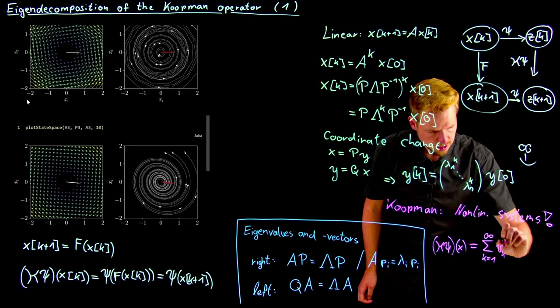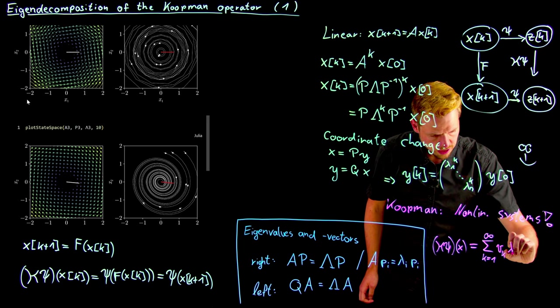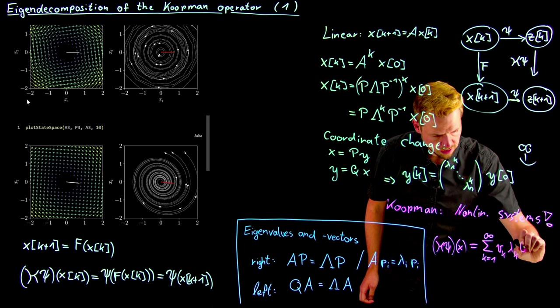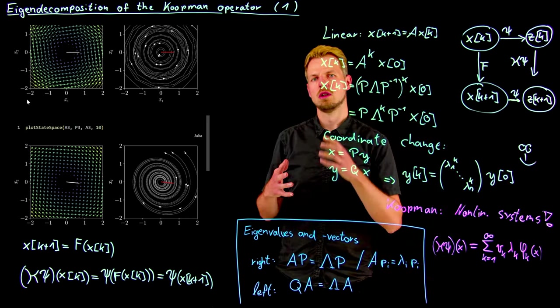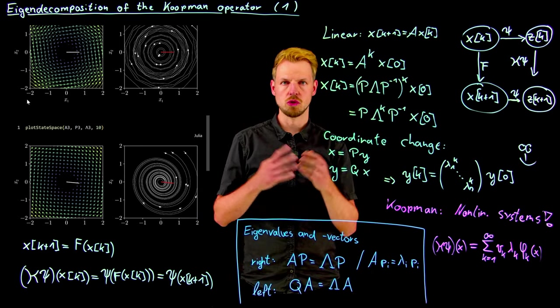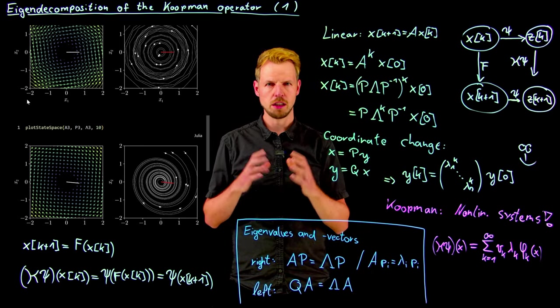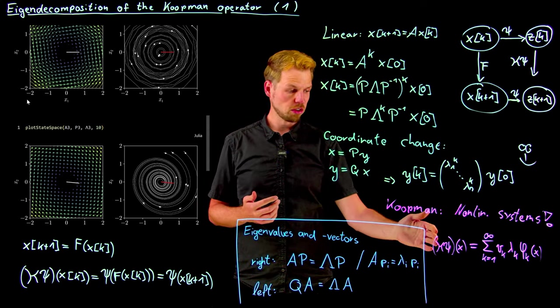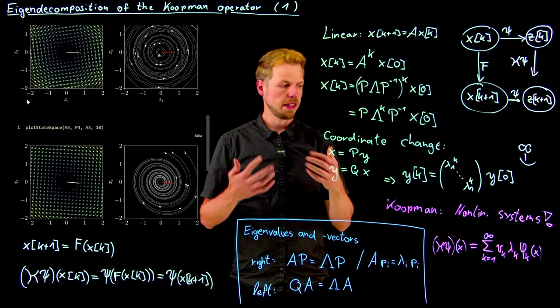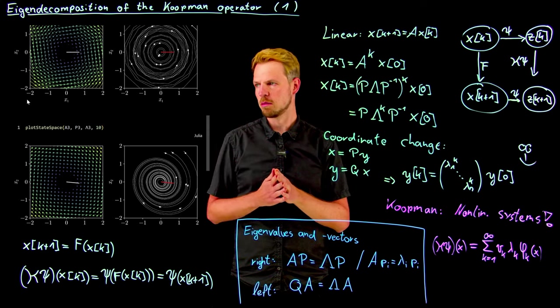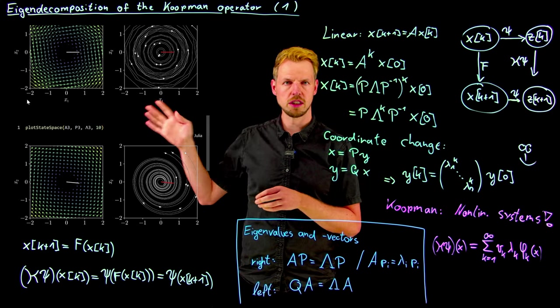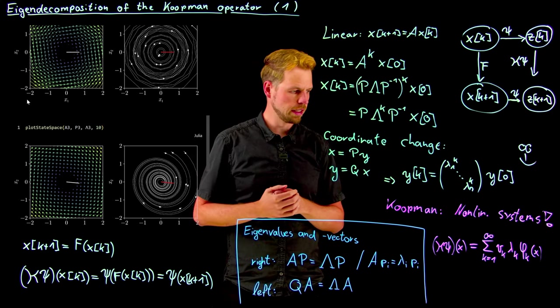So this is the whole or the main motivation to study systems through the Koopman lens. If we have means to approximate this operator, then we can compute eigenvalues and eigenfunctions and study systems very similarly to what we have seen here for truly linear systems.